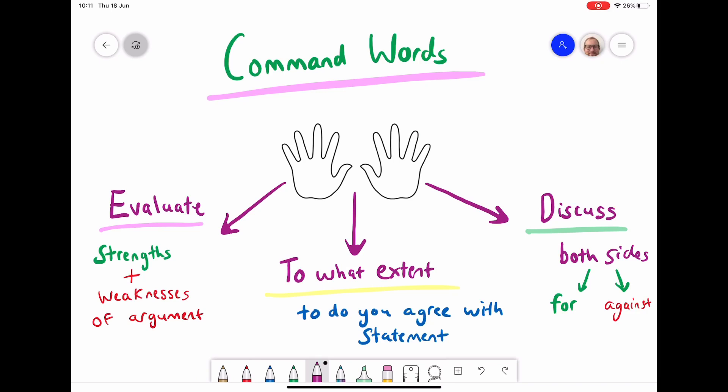On one hand, I am for this argument, I'm for this idea. On the other hand, I am against it. So this is a kind of visual technique to help you think about how you might structure your essay, but also what you need to do to answer the command word correctly.